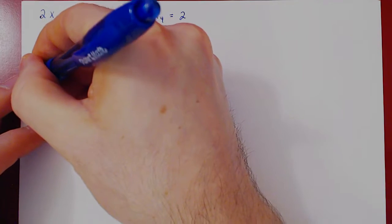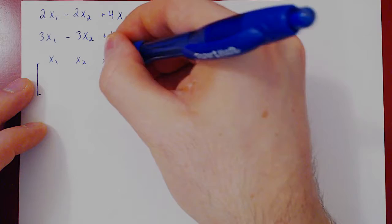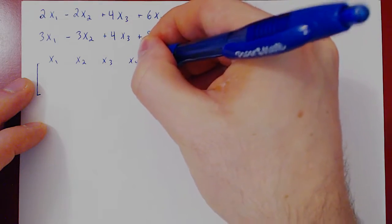So as always, we construct the corresponding augmented matrix. We will keep the order as it is, so x1, x2, x3, x4.